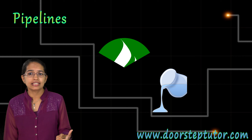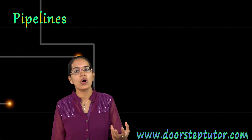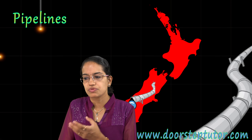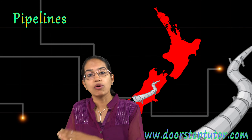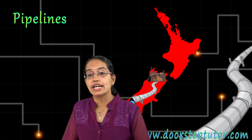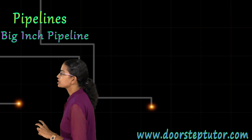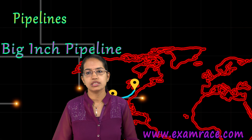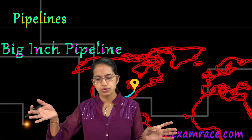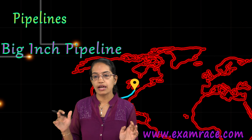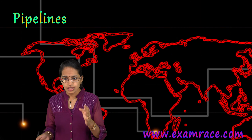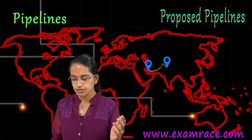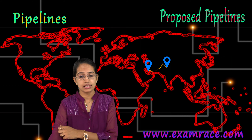Pipelines are best for transporting liquids and gases — oil and gas pipelines are most commonly heard of. In New Zealand, milk is transferred from farms to factories through pipelines. Big Inch is one of the most famous pipelines, carrying petrol from oil wells in the Gulf of Mexico to the northeastern United States. There is also a proposed pipeline from Iran to India via Pakistan for oil and natural gas, which is under discussion.